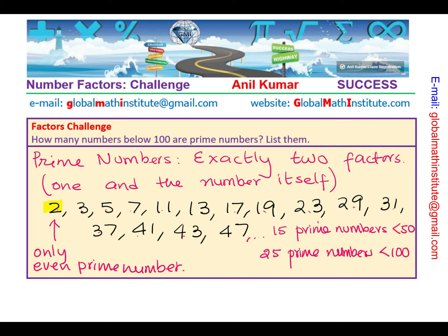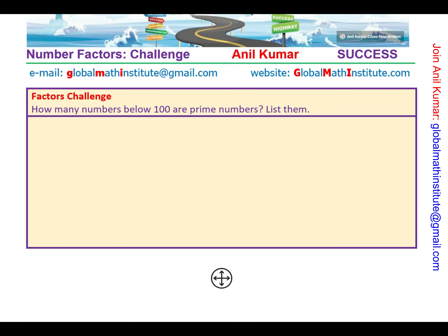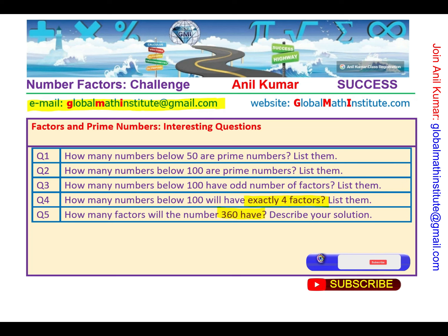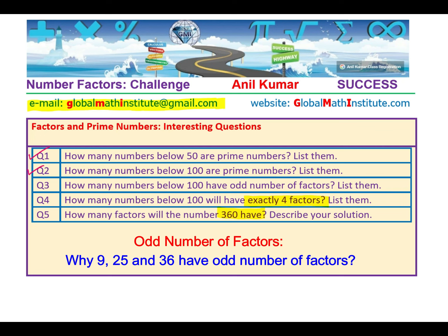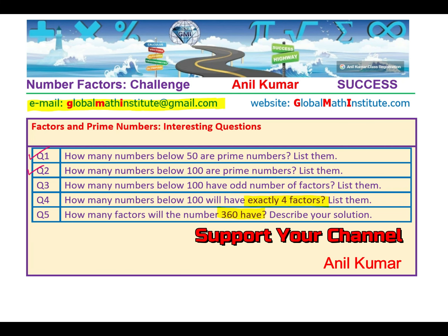I hope you find this interesting and useful. Now, the other question we had: so we have answered the first two in a way — below 50 I've given you the list, and below 100 we have 25 prime numbers; you have to list them all. How many numbers below 100 have an odd number of factors? That is something I would like you to think about. Odd number of factors — how do you answer this question? Think about it and I am going to take this up in the next video.